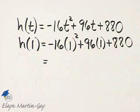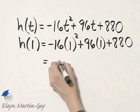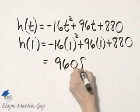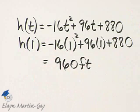So it's negative 16 times 1 squared plus 96 times 1 plus 880. And if you simplify that expression on the right, you'll have 960 and that stands for 960 feet. So after 1 second, the height of the pebble is 960 feet.